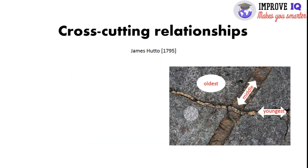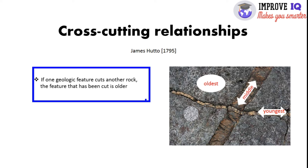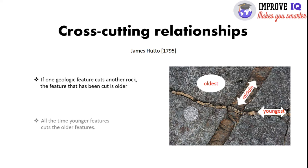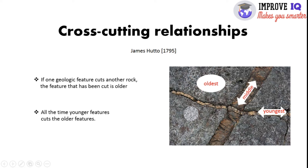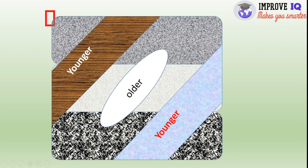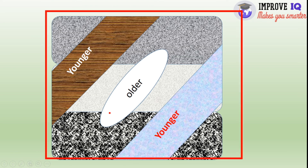The principle of cross-cutting relationships states that if one geologic feature cuts another rock, the feature that has been cut is the older one. In other words, younger features always cut older features. As seen in the picture, the largest rock strata is cut by the middle strata, and the middle strata is cut by the smallest strata. According to this principle, the largest is the oldest and the smallest is the youngest, with the middle being of intermediate age.